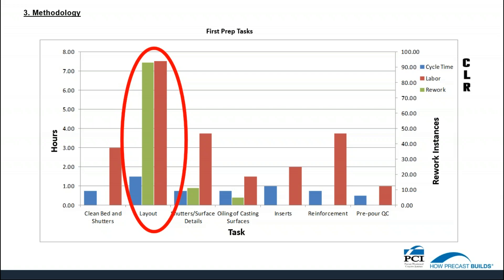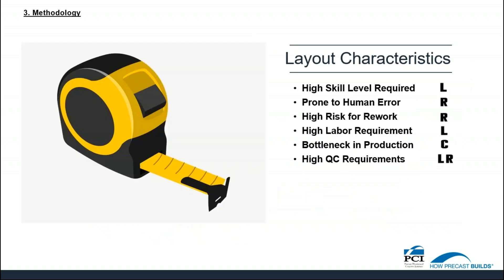Let's look further into layout. What are some characteristics involved in the layout process and can they be associated back to the CLR? The answer is yes. Characteristics of layout are: high skill level is required, it is prone to human error, has a high risk for rework, high labor requirement, can be a bottleneck in production, and has a high quality control requirement. These characteristics can all be quantified, and further qualitative analysis can also be done to determine additional characteristics.